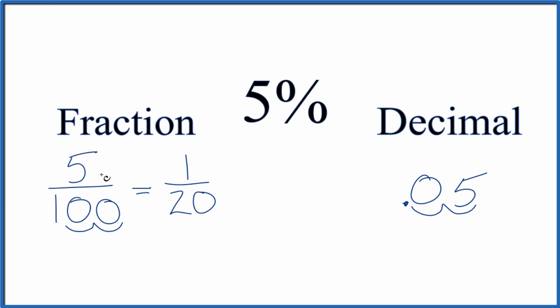So the fraction 5 one-hundredths, or 5%, that's going to equal the decimal 0.05. And often you'll see a 0 put in front like this. And you could divide 1 by 20, since these are equivalent fractions here, and you'd end up with 0.05. So that's how you do it.